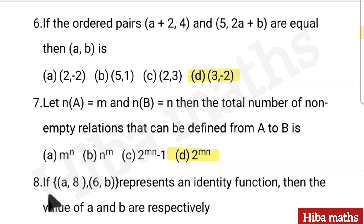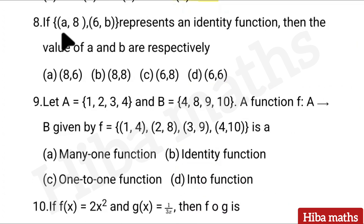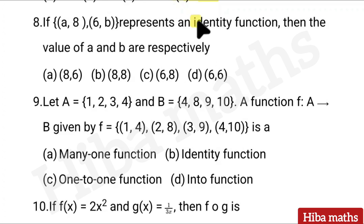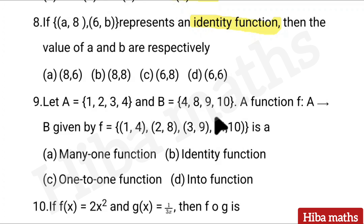Eighth question: If (a, 8, 6, b) represents an identity function, then the value of a and b are respectively — hint: identity function. We have 4 options: (8, 6), (8, 6), (8, 6), (8, 6, 6). The correct answer is option A.